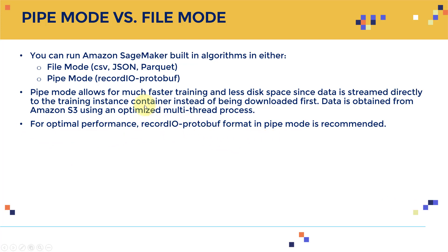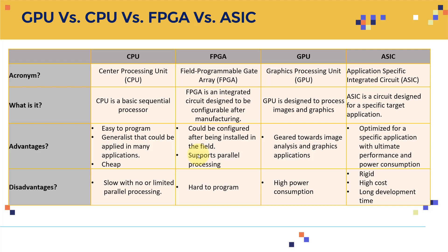Before digging further into SageMaker details, let's look at the differences between CPU, GPU, FPGA, and ASIC. CPU stands for Central Processing Unit, FPGA for Field Programmable Gate Array, GPU for Graphics Processing Unit, and ASIC for Application Specific Integrated Circuits.